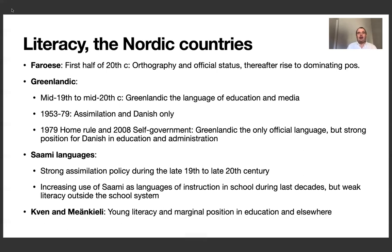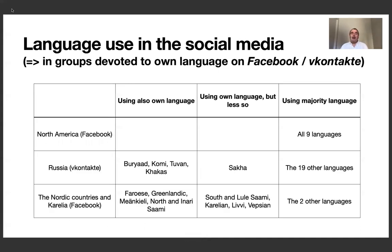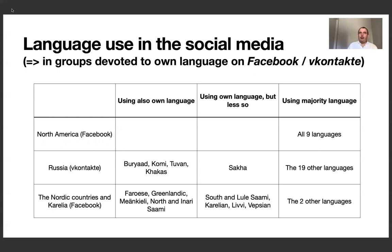Kveeni and Kili have a young literacy and marginal position in education and elsewhere. If you now look at social media — I've been looking at groups devoted to discussing the own language on Facebook, or in Russia on Vkontakte, which is equivalent to Facebook in Russia. For North America, these are the nine languages for which there are Wikipedia editions, and for all of them the discussion is in English. In Russia, for most of the languages the discussion goes in Russian. But for Buryat, Komi, Tuvan, and Khakas — the largest ones — the discussion is also in the minority language, and partly also for Sakha. For Nordic languages, most language communities discuss matters in their own language to a larger or smaller degree.